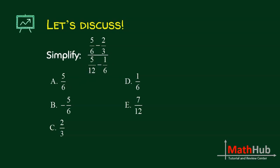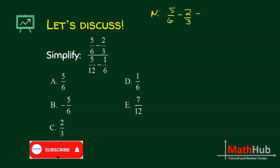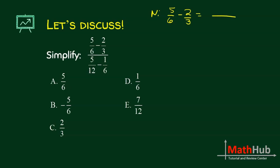Let us first simplify the numerator: 5/6 minus 2/3. The LCD is 6. This gives us 5 over 6 minus 4 over 6, which equals 1/6.